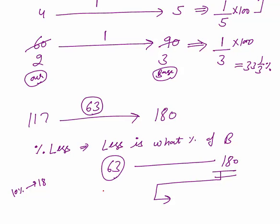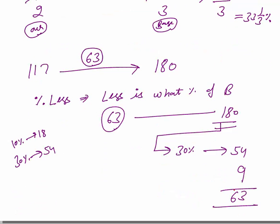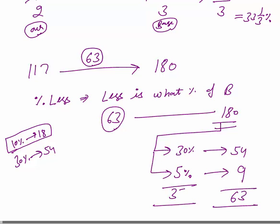18 threes are 54, so 30% of 180 is 54. I need 9 more to reach 63. By common sense, if 10% of 180 is 18, then 5% is 9. So 35% of 180 is 63. Therefore 117 is 35% less than 180. Whenever you can't take ratio, calculate less is what percent of base using the 10%/5%/1% method.